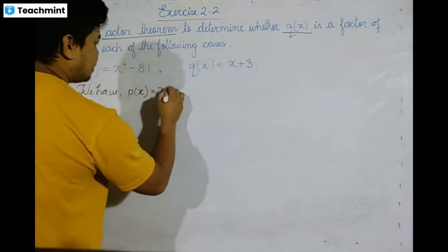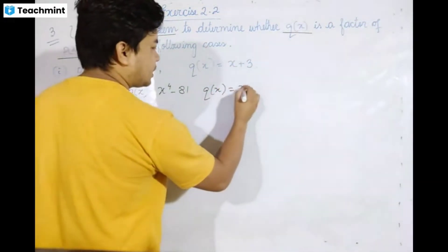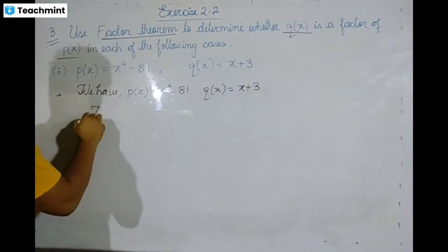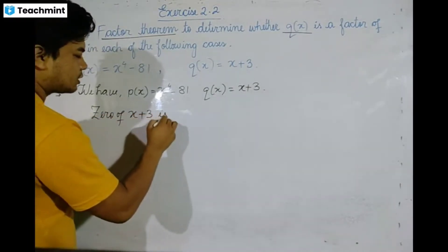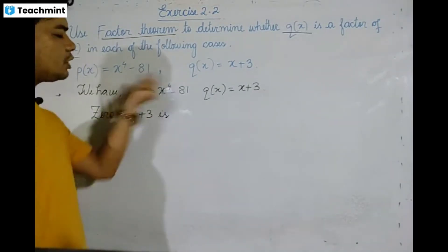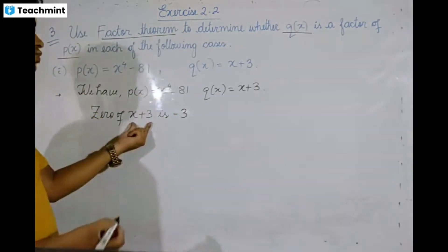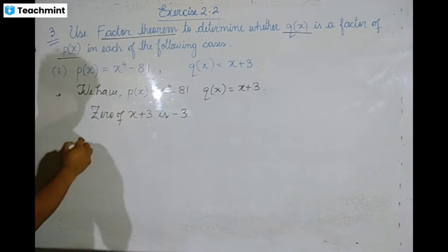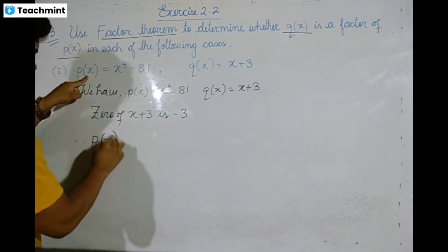Now, P of x is x to the power 4 minus 81, and Q of x is x plus 3. Setting x plus 3 equal to 0, we get x is equal to minus 3.